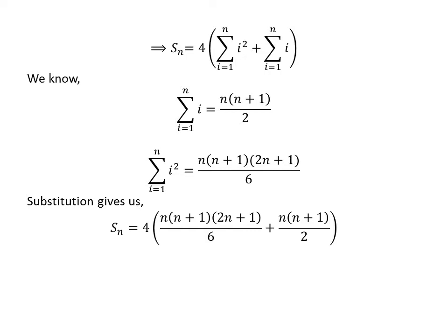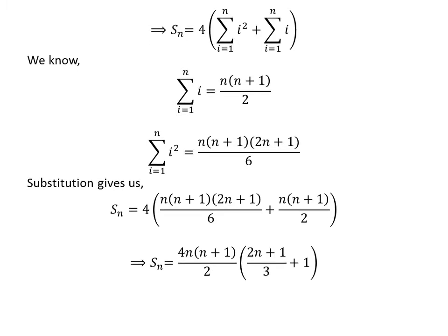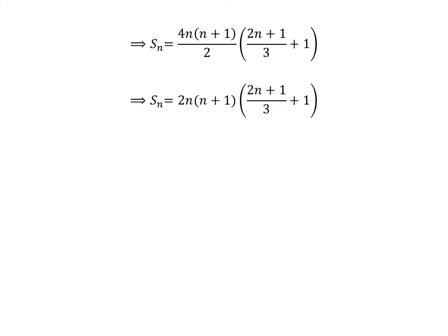Substituting these formulas into the expression for S_n, we get S_n equal to 4 times [n(n+1)(2n+1)/6] plus 4 times [n(n+1)/2]. Taking out the common factor n(n+1)/2, we get S_n equal to 4 times n(n+1)/2 times the whole expression (2n+1)/3 plus 1.